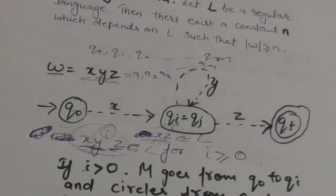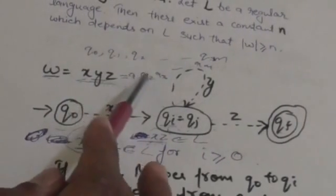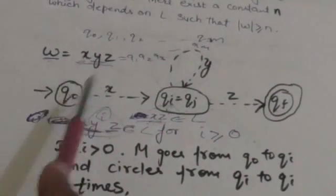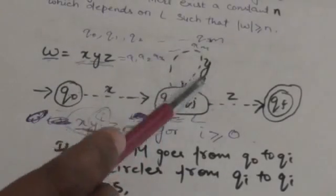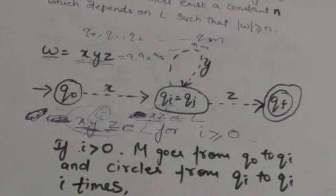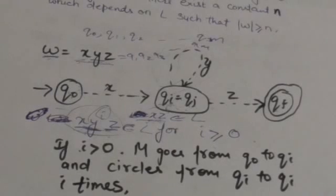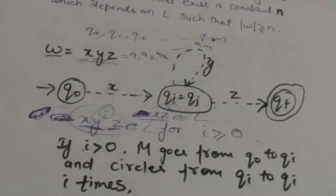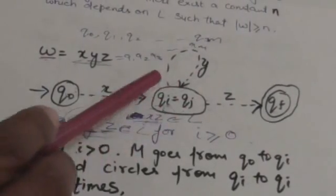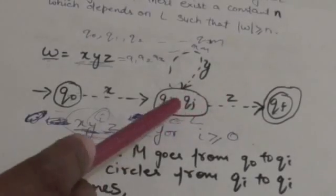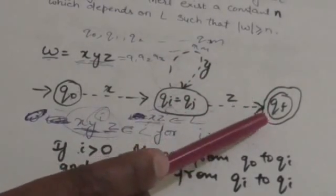So we have divided the string w, which equals a1, a2, a3 up to am, into three parts x, y, z. Substring x will drive the machine from its initial state to state qi. Substring y will drive the machine from qi state to qj state. Since we supposed qi equals qj, the machine will jump from qi back to qi on reading substring y. Reading substring z, the machine will jump from qi to qf, the final state.